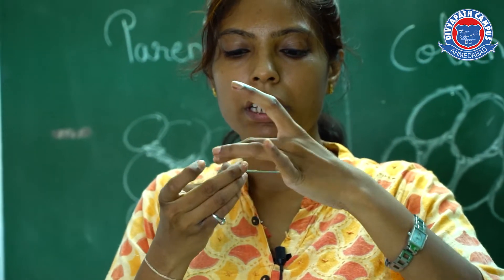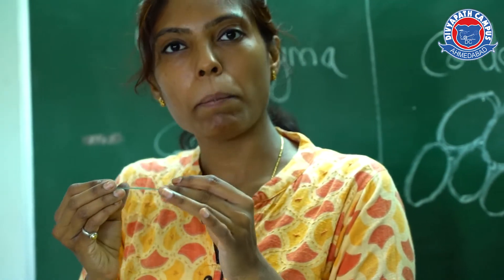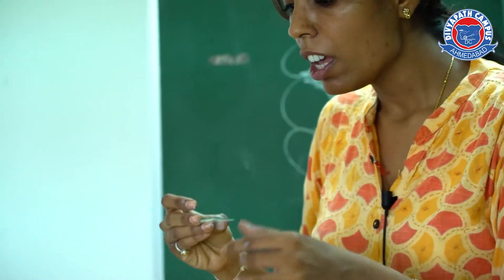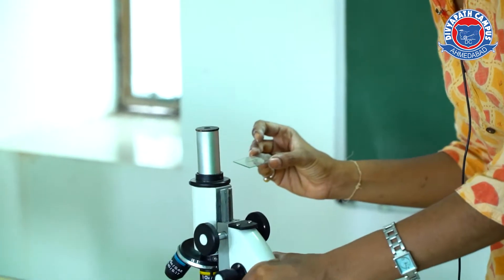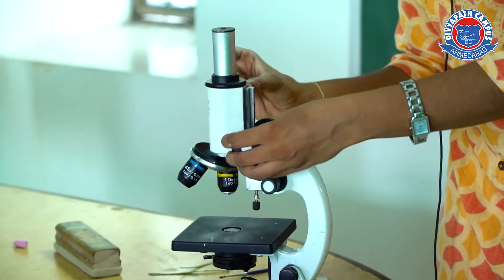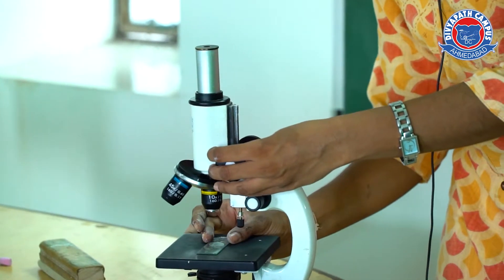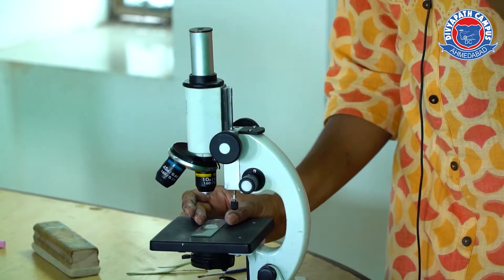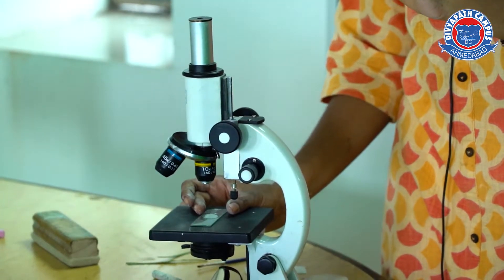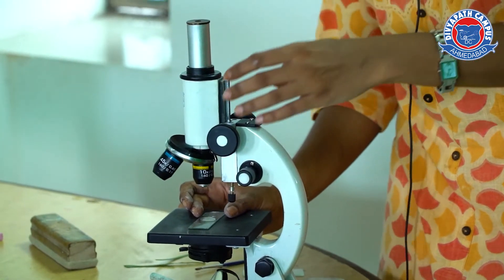After putting the cover glass, we have to observe this slide under the microscope at 10x magnification. In the case of leaves, root, or stem, we have to take 10x magnification. Only in the case when we have to observe stomata, which are very small, we have to use 45x magnification. Otherwise, we are going to use only 10x magnification.